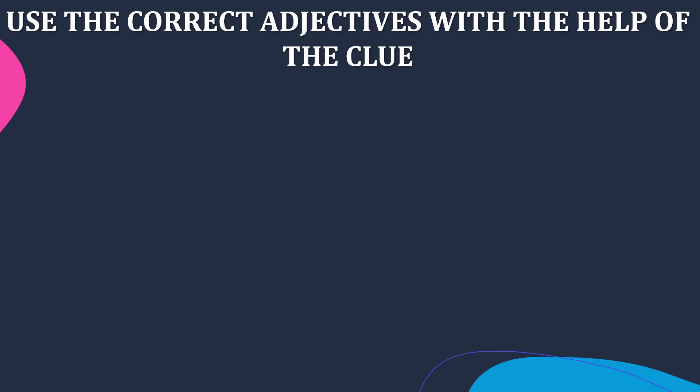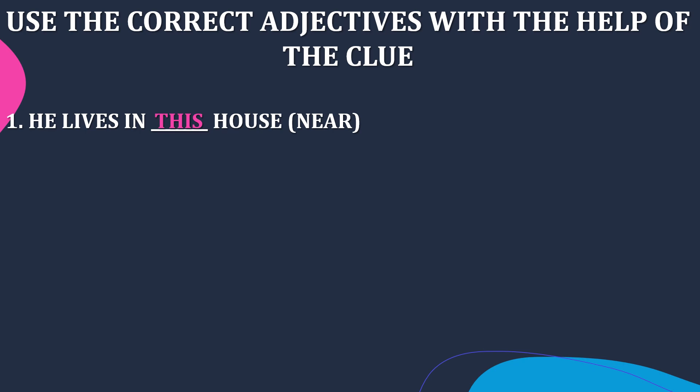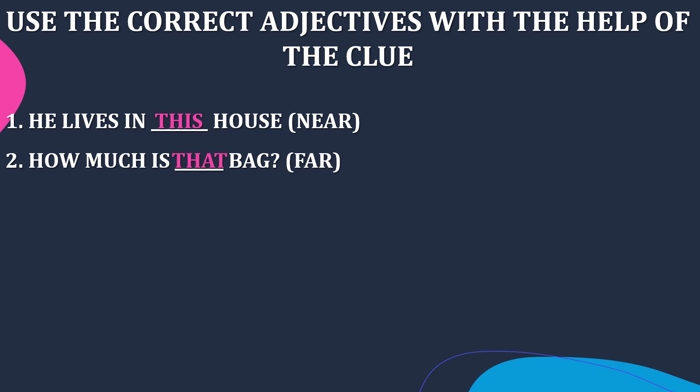Now let's use the correct adjective in the blanks with the help of the clue given. First sentence: 'He lives in ___ house.' The clue is near. House is a singular noun, so the answer is 'this.' He lives in this house. Second sentence: 'How much is ___ bag?' The clue is far, and bag is a singular noun, so the answer is 'that.' How much is that bag?